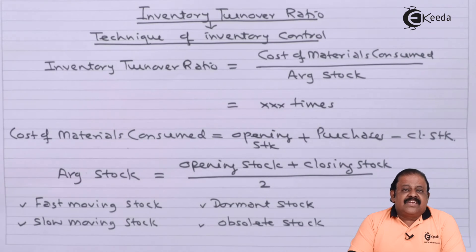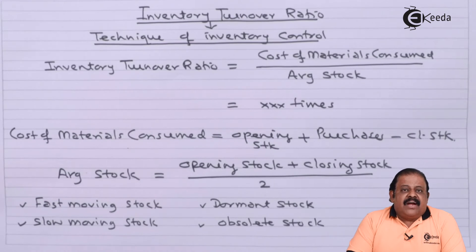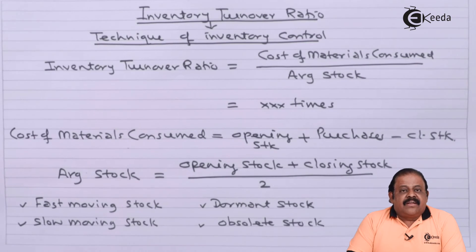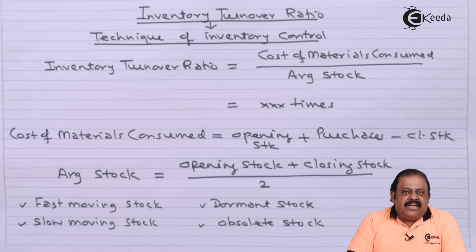Therefore, investigation will be required by management. The company should compare its own inventory turnover ratio from past to current to arrive at decisions. Alternatively, the inventory turnover ratio of our company can be compared with other companies in the same industry. That is the advantage of inventory turnover ratio.